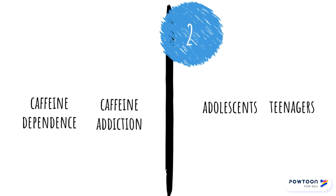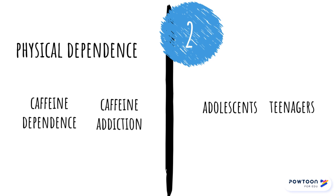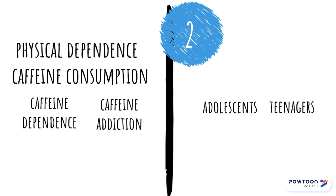The second way to develop more keywords is to think of broader terms. For example, caffeine dependence could fit under the general umbrella of physical dependence. We could also consider caffeine consumption, so we have a couple of options. Teenagers could fit under the general category of students, so we can add that to the list as well.